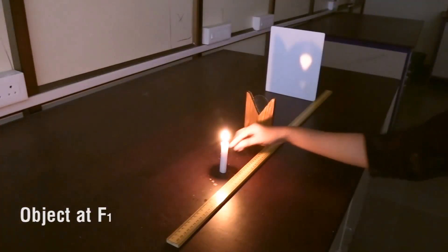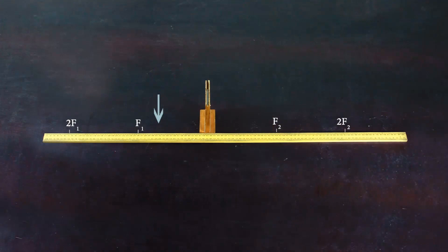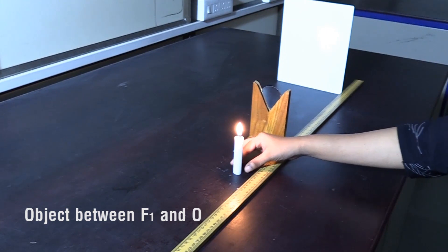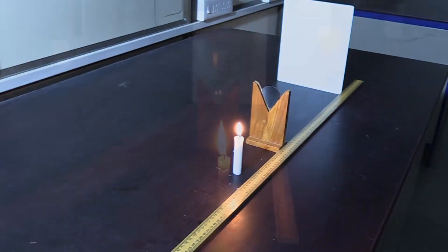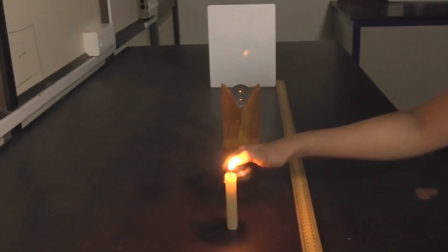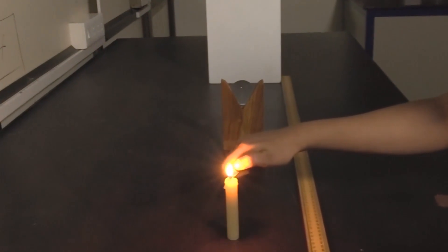Case 4, object at F1. Case 5, object between F1 and optical center of the lens O. Note that for obtaining distinct and sharp images of the candle flame, it is advised to perform this experiment in a dark room or at least in the shade where no direct light reaches the working table. Light a candle using a lighter.